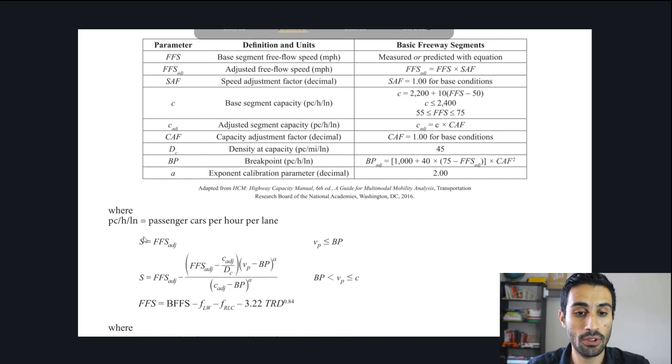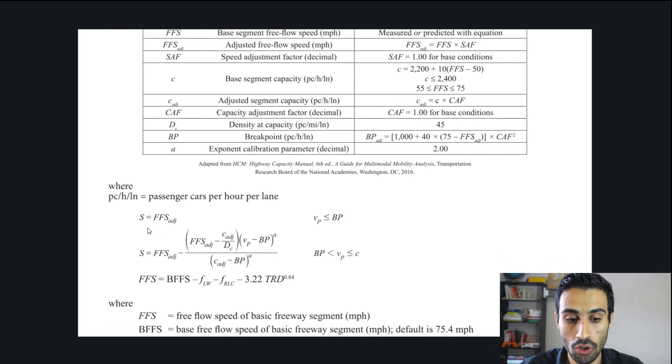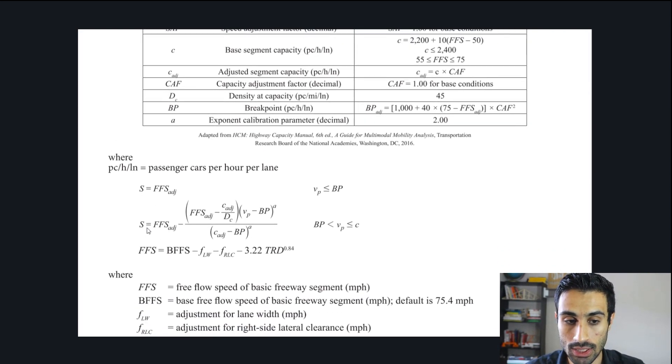And remember, I don't want to teach stuff here. Just know what we do to get that level of service is essentially at the beginning. We find number one, find the free flow speed. Then number two, find that demand flow rate at base conditions. Number three is we find the speed, the operating speed or the mean speed, which is going to be our S value.